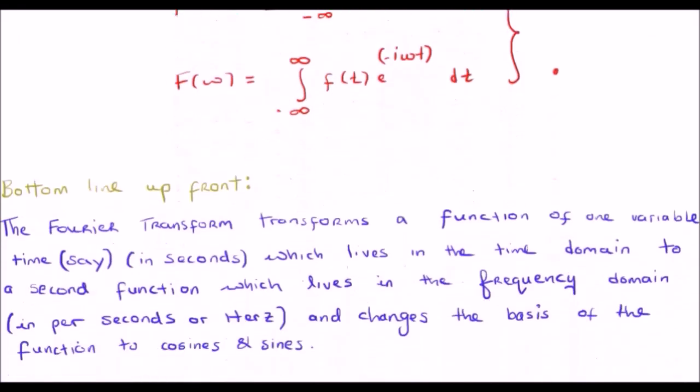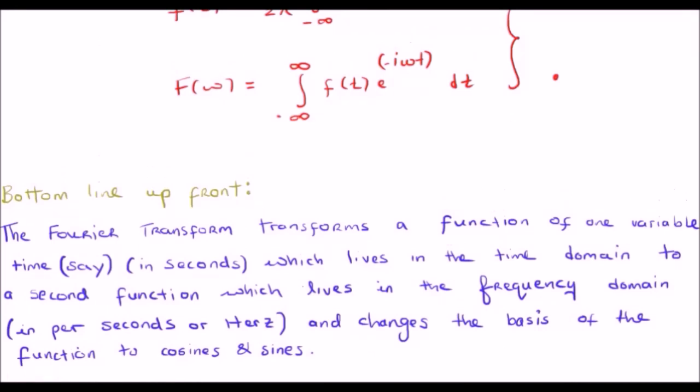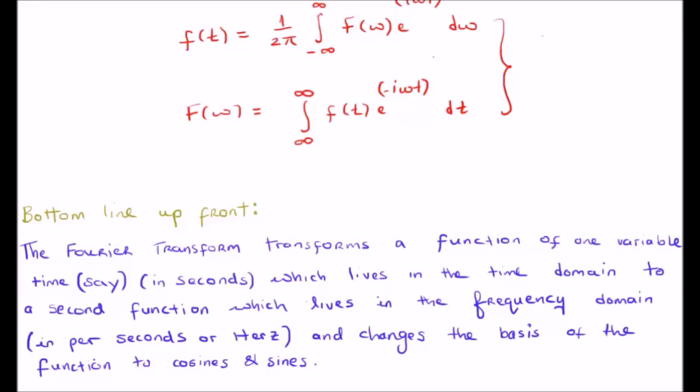Moving on, let's discuss the Fourier transform, let's give you the bottom line. The Fourier transform transforms a function of one particular variable, let's say time, which of course is measured in seconds and lives in the time domain. It will be transformed to a second function which lives in the frequency domain and is going to be measured in per seconds or hertz. The second thing it does is it changes the basis of the function from whatever it was at the start to cosines and sines.